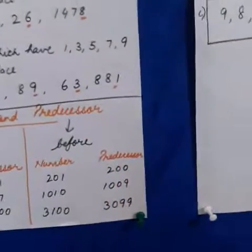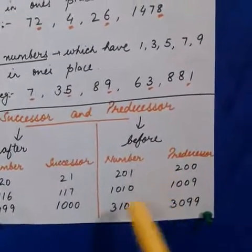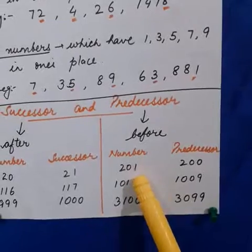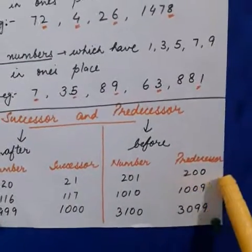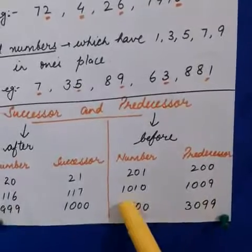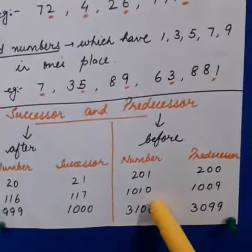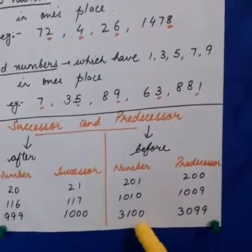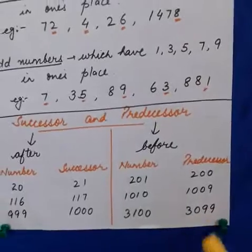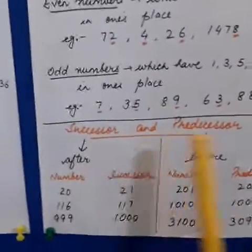Moving to the predecessor. Predecessor means before, and before means minus 1. The number here is 201. So what will be its predecessor? Minus 1 — it comes out to be 200. Next, 1010: its predecessor will be one number before this, so that will be 1009. And 3100 — its predecessor is 3099. So this way you can solve examples of successor and predecessor.